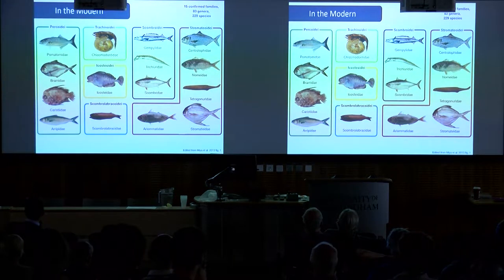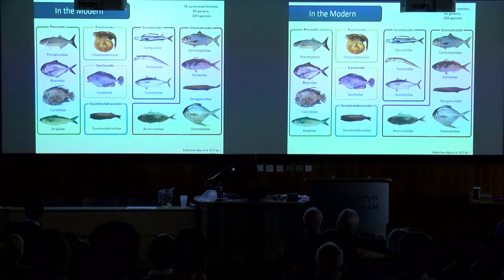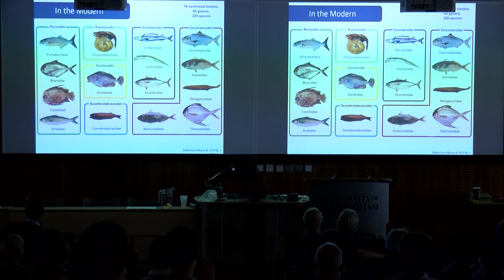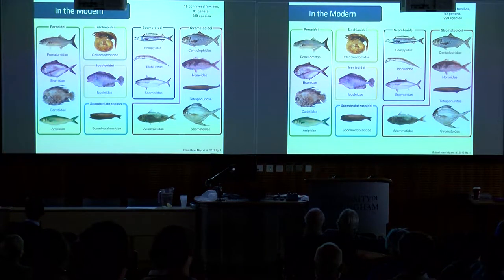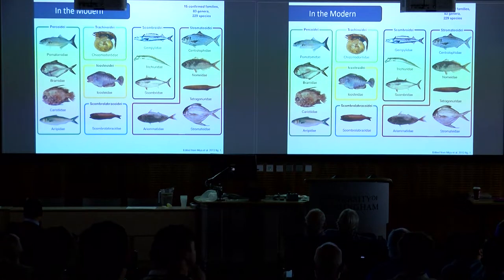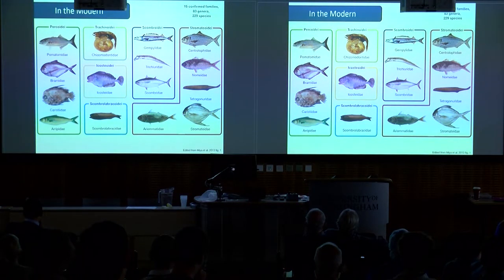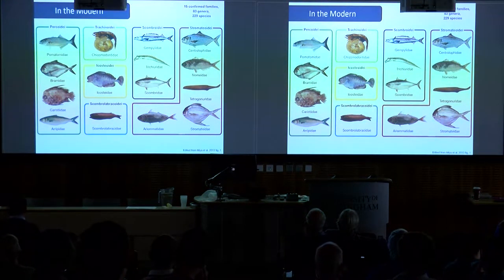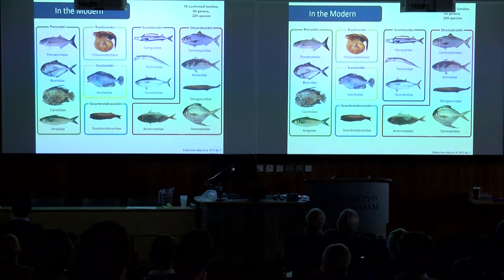This group is made up of 15 families — this is edited from the MIA paper, which is a paper I'll come back to later in the talk. There are 83 genera and 229 species, and there's also another family, a monotypic family, that might be a member of this group.